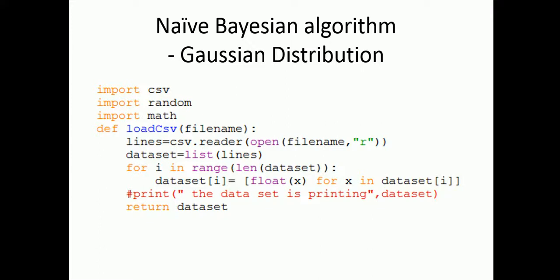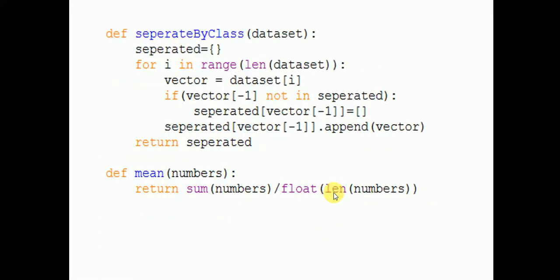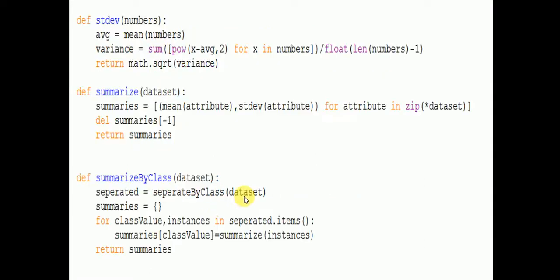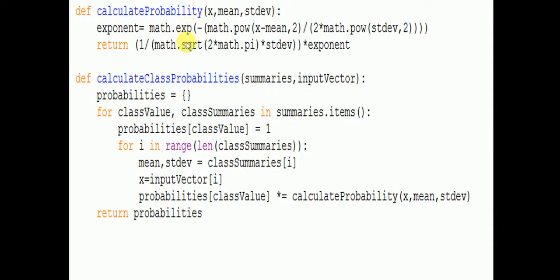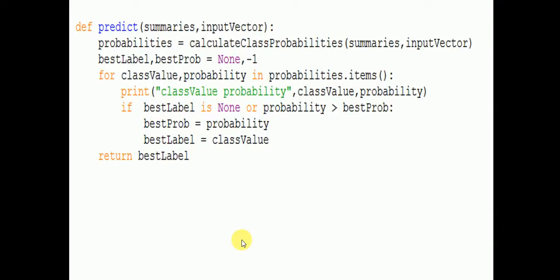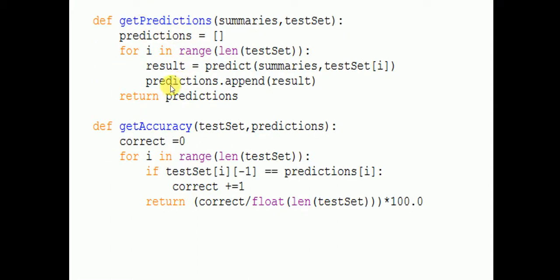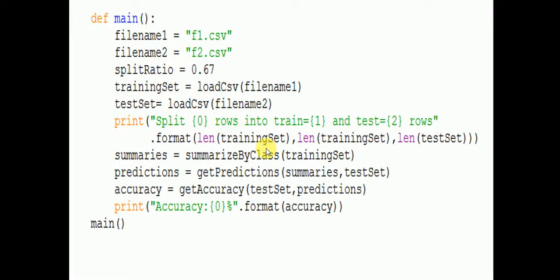Today we will discuss the Naive Bayes algorithm and Gaussian distribution. Gaussian distribution uses mean and standard deviation. Here is the code we'll be using for an explanation of how we are using Naive Bayes with Gaussian distribution. The functions include load files, separate by class, mean, standard deviation, summarize, summarize by class, calculate probability, calculate class probability, and predict.